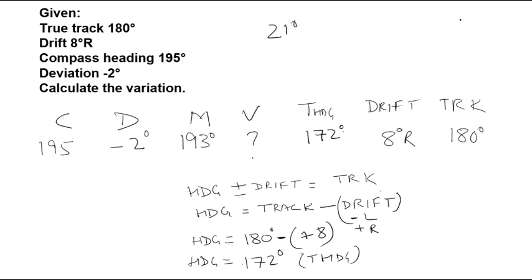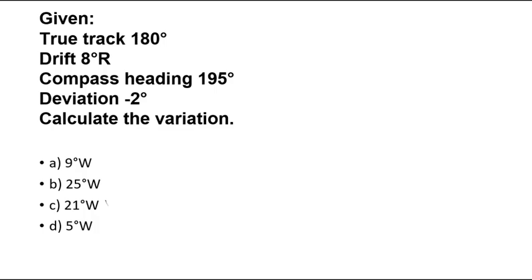Now, we have got heading as 172 degrees and we have magnetic as 193 degrees. The difference between them is 21 degrees. And for the sign, if magnetic is more than true, then it will be west. So, here our answer is going to be 21 degrees west which is going to be our answer. So, option C is our correct answer for this question.